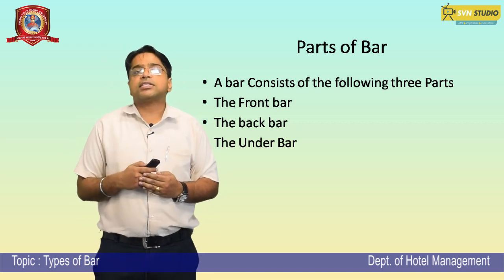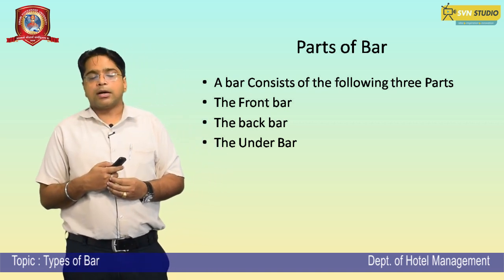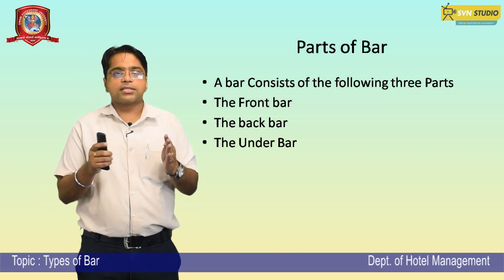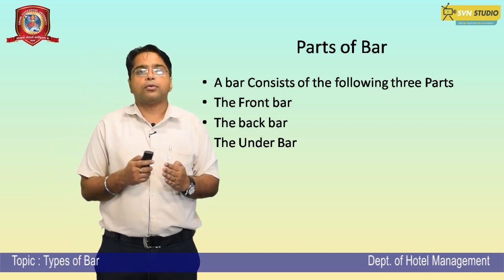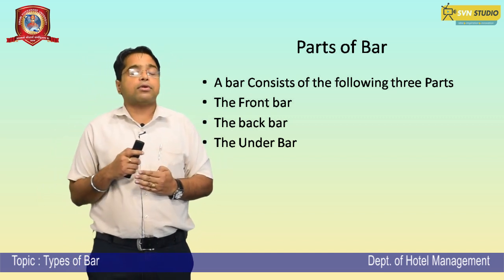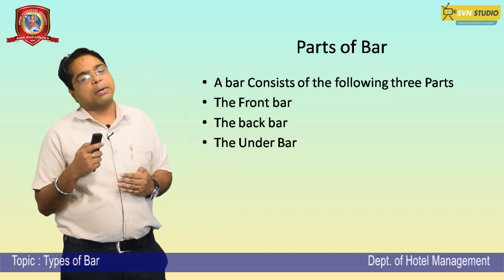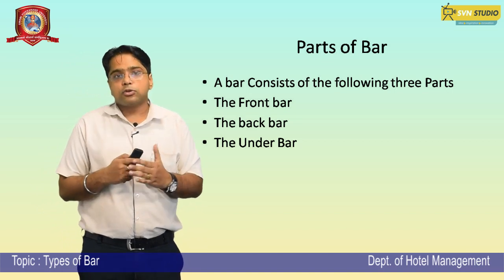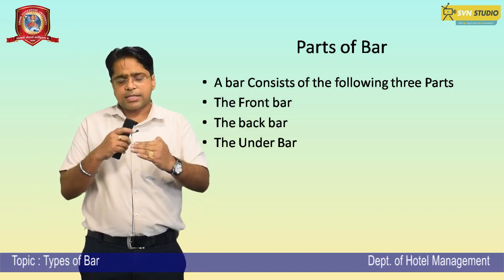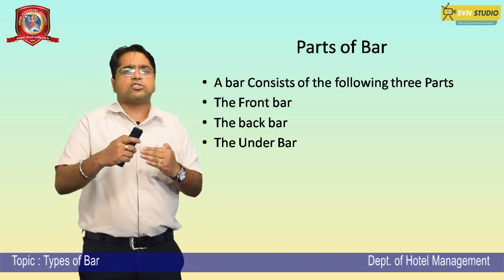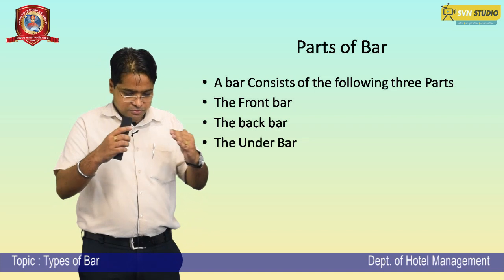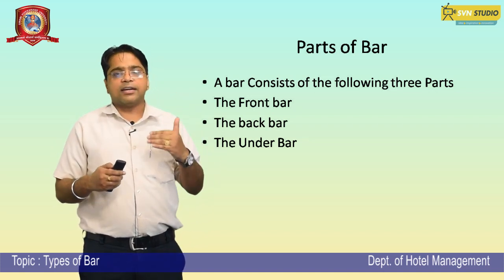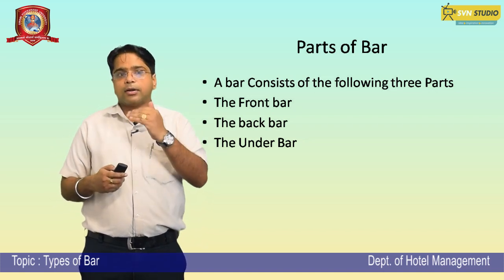Now I will discuss about the parts of bar. A bar generally consists of three main parts: the first is the front bar, the second is the back bar, and the third is the under bar.